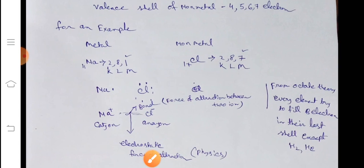We know that from octet theory, every element tries to fill 8 electrons in their last shell. But in the case of sodium, there will be in the last shell 1 electron present, and in the case of chlorine, 7 electrons present.